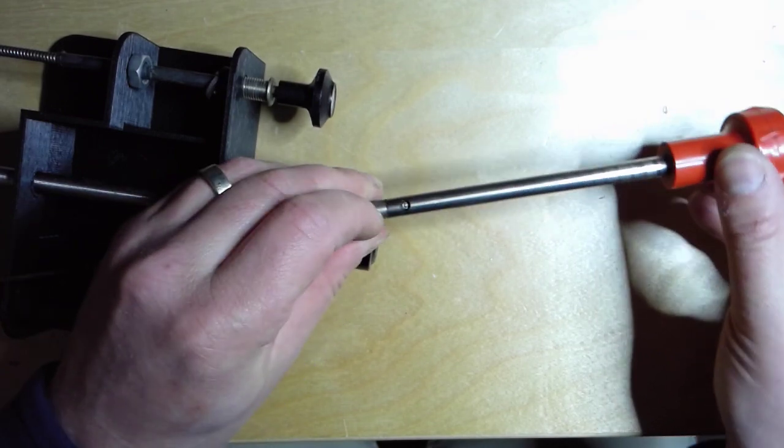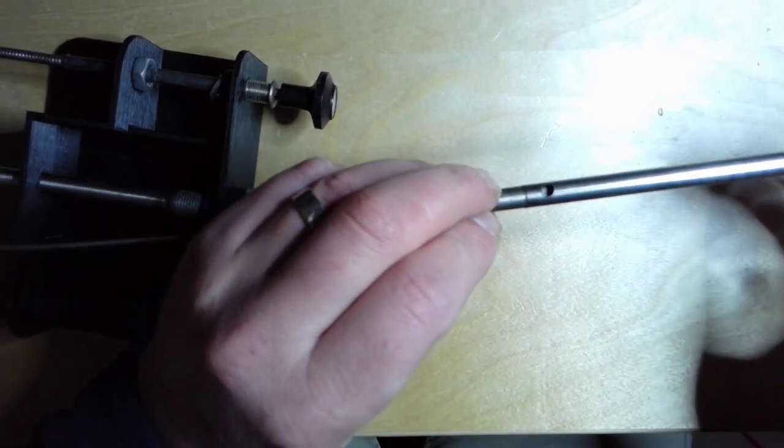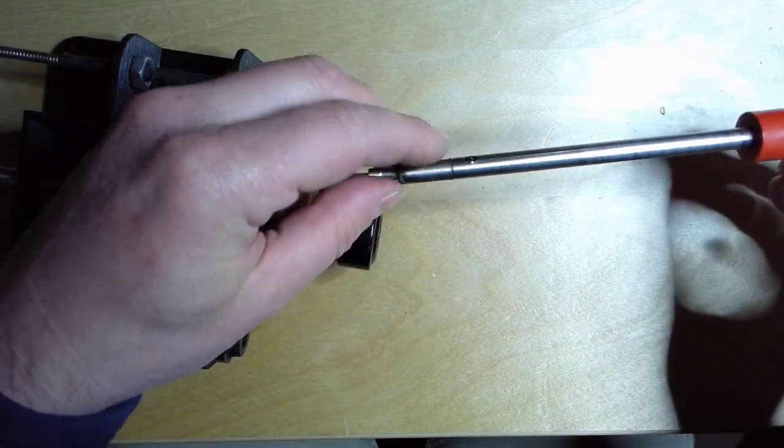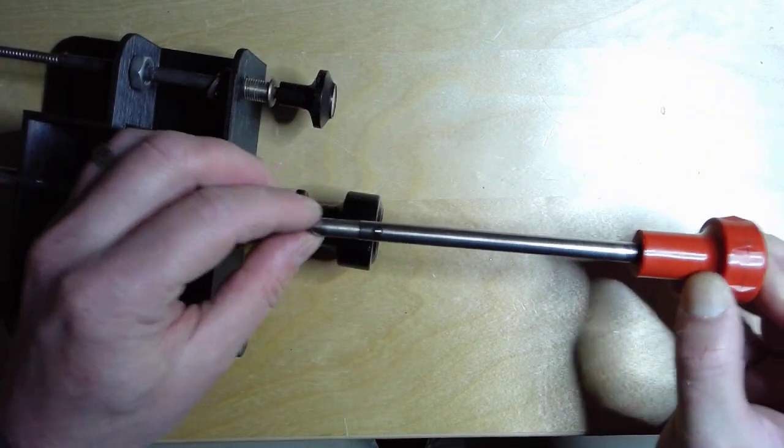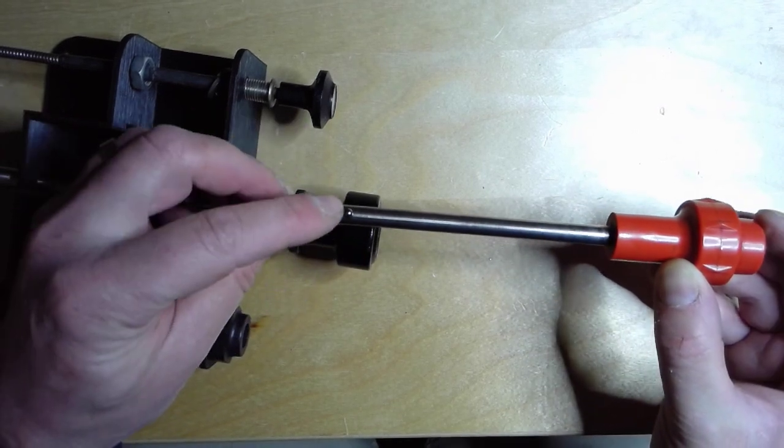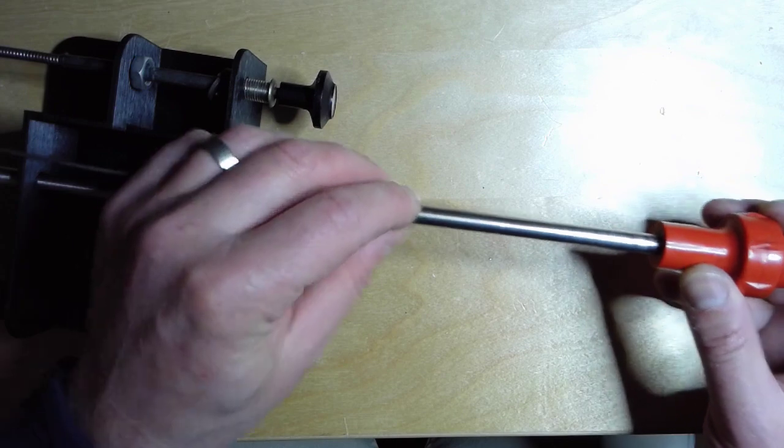You can see in here that it opens up and allows the bearing to retract so that it's inside of the tube. When that happens, you can push this past the threads. Then when you release the button, the bearing has to ride in the threads, and you get the vernier action.